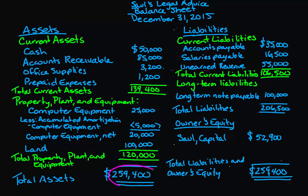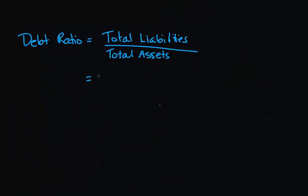So the debt ratio shows what percentage of our assets are financed through debt. Our debt ratio is total liabilities over total assets, so we're going to be using these two numbers here: total liabilities of 206,500 and total assets of 259,400.